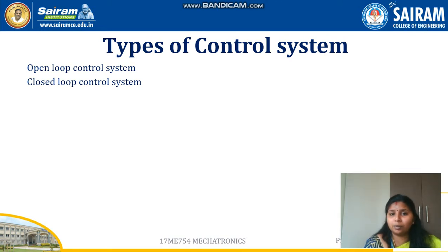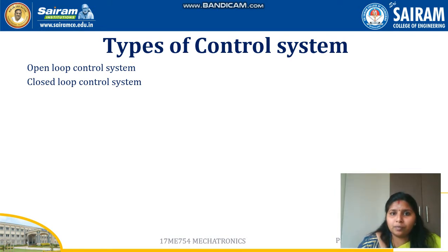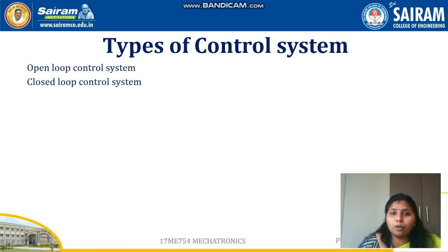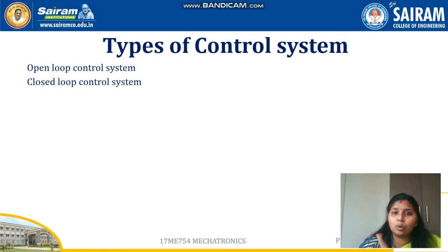There are two types of control systems. The classification is based on the loop. One is the open loop control system and the other is the closed loop control system.